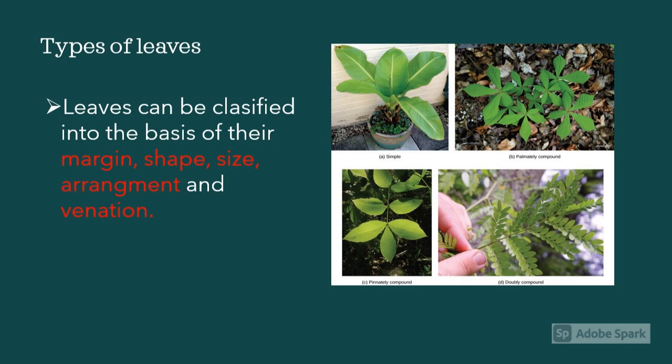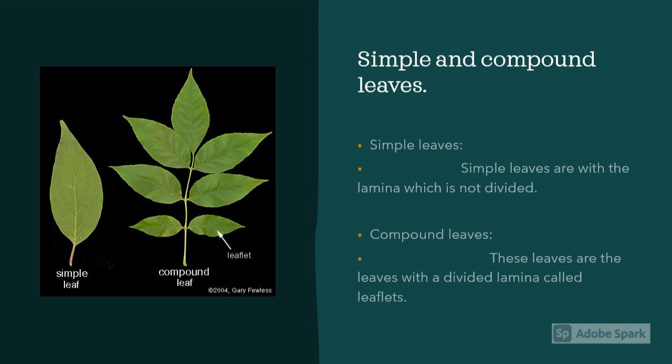Now let's understand them. Leaves can be classified into simple and compound. Simple leaves are the leaves in which the lamina is not divided. Compound leaves are the leaves in which the lamina is divided into small parts, and those small parts are called leaflets.